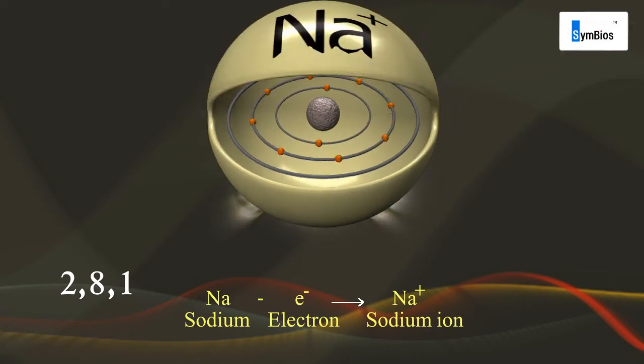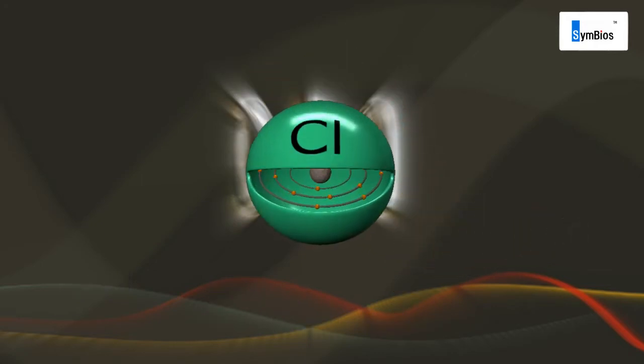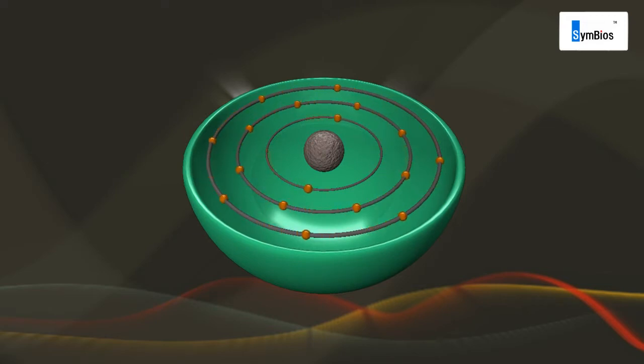The atomic number of chlorine is 17, so its electronic configuration is 2, 8, 7. Chlorine atom has seven electrons in its outermost shell and needs one more electron to achieve the stable eight electron inert gas configuration.